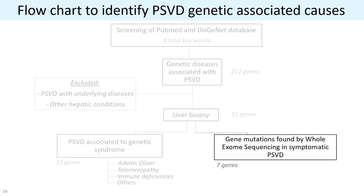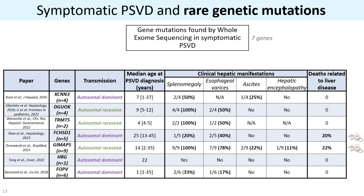Going back to the flowchart, there are also rare gene mutations found by whole exome sequencing in symptomatic PSVD patients — a list of seven genes. The transmission of these genes is autosomal familial inheritance, and again the median diagnosis age of PSVD is very young, from 1 to 25 years old. Two specific genes present a more severe outcome with ascites and encephalopathy. In these publications, once the authors found the mutations by whole exome sequencing, they performed in vivo deletion of these genes and concluded that the liver manifestations observed were due to deficiency of these genes.